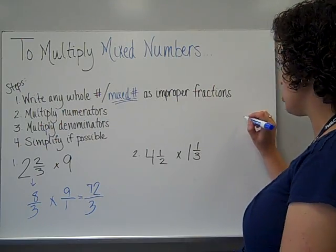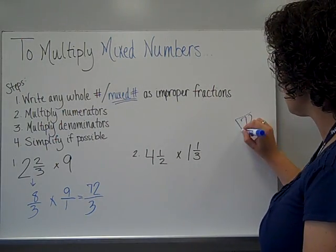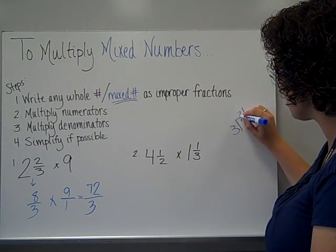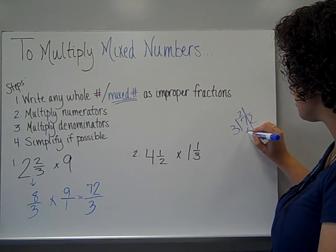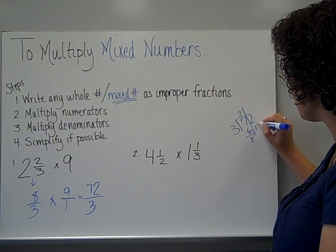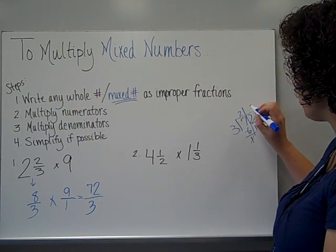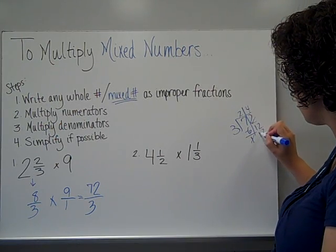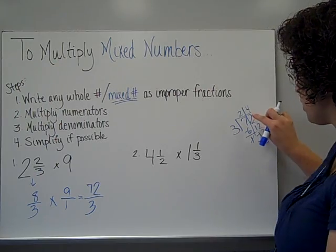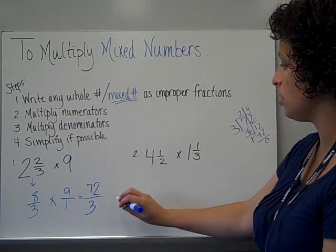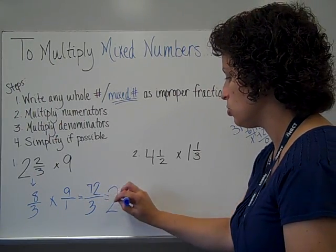So over here to the side, I'm going to do 72 divided by 3. 3 could go into 7 twice, that would be 6. Now I have 12, 3 can go into 12 four times, that uses all 12, nothing left, so my answer is actually 24.